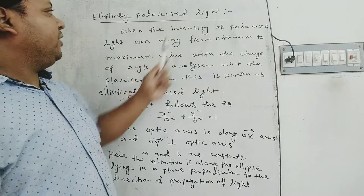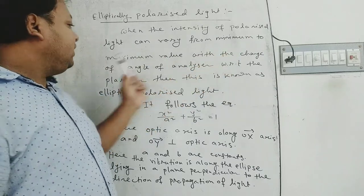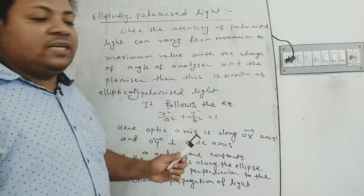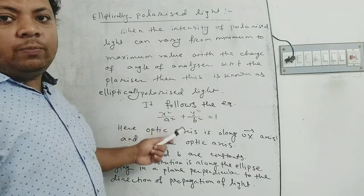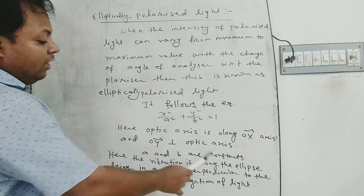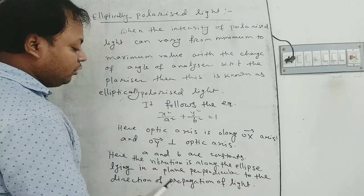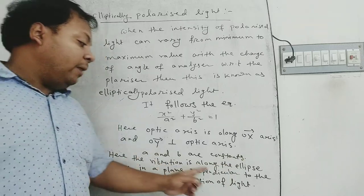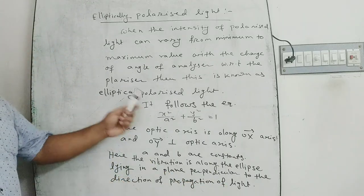Next, elliptically polarized light. When the intensity of polarized light can vary from a minimum to a maximum value — where the minimum never equals zero — with the change of angle of analyzer with respect to the polarizer, then this is known as elliptically polarized light. It follows the equation x²/a² + y²/b² = 1. The vibration is along an ellipse lying in a plane perpendicular to the direction of propagation of light, which is why it is known as elliptically polarized light.